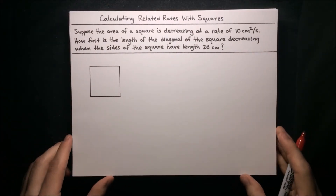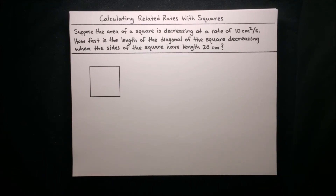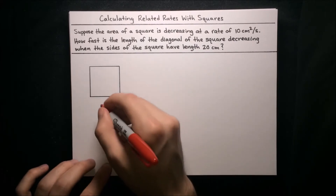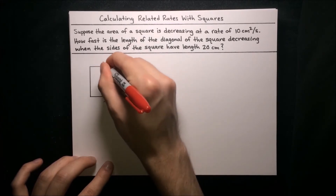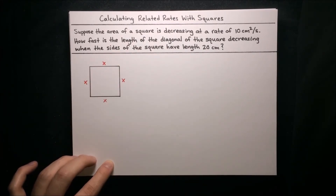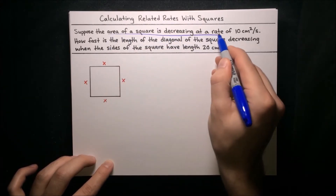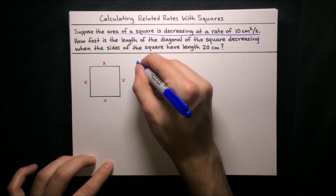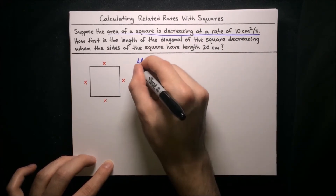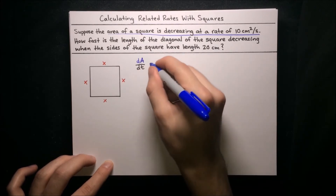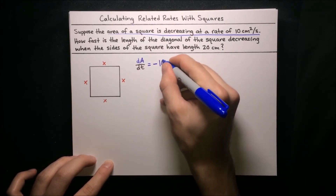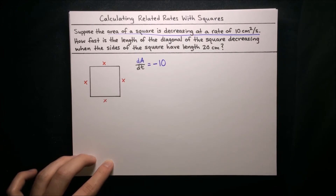Alright, next question. Suppose that the area of a square is decreasing at a rate of 10 centimeters squared per second. How fast is the length of the diagonal of the square decreasing when the sides of the square have a length of 20 centimeters? Again we've got our picture of a square, and we label its sides with variable x. We're told that the rate of change of area dA/dt is equal to negative 10 — negative because the area is decreasing, its rate of change is negative. The area keeps getting smaller and smaller with time.